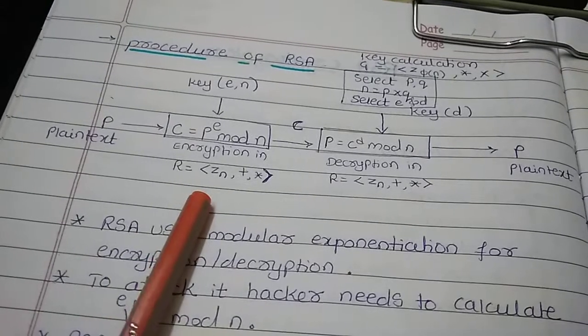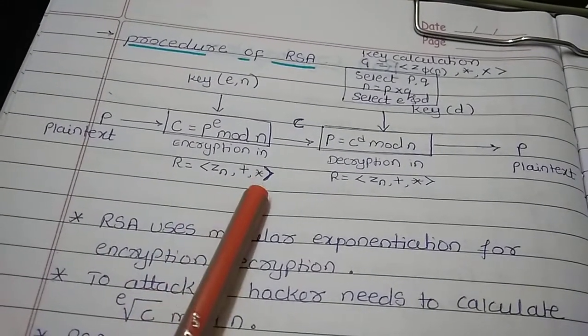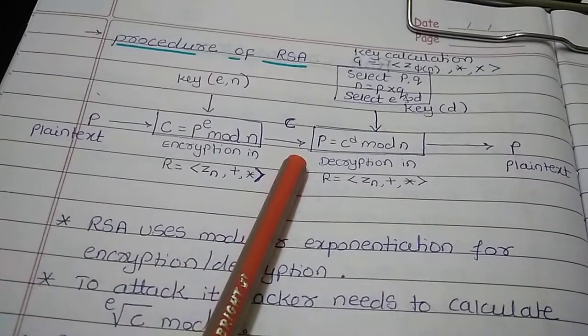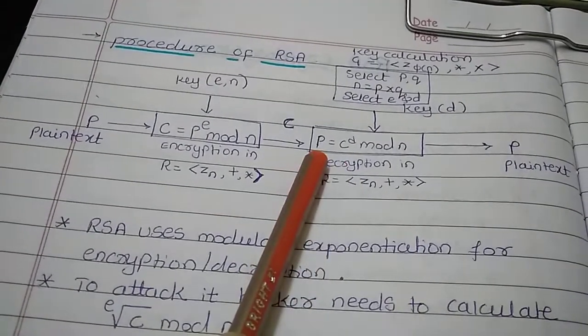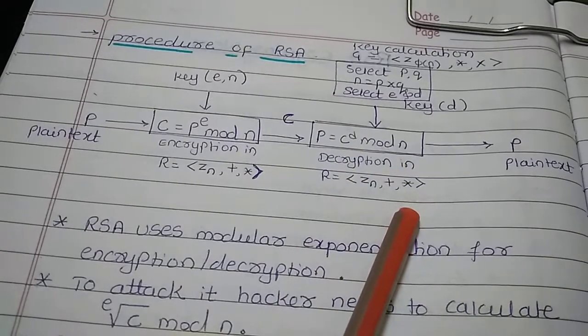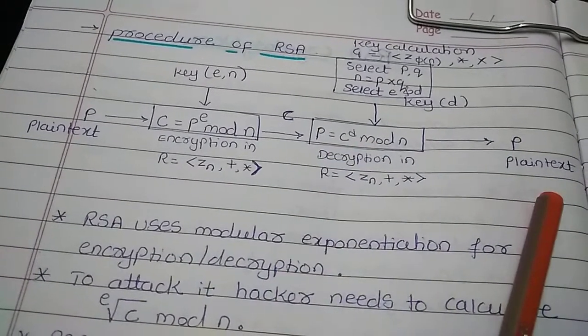R is any group, integer group with operations like addition and multiplication. The encrypted message is received by the receiver who decrypts it using the formula P equals C to the power D mod N. After decrypting we obtain the plain text.